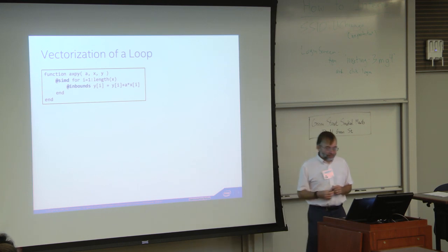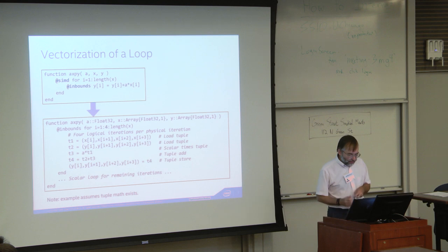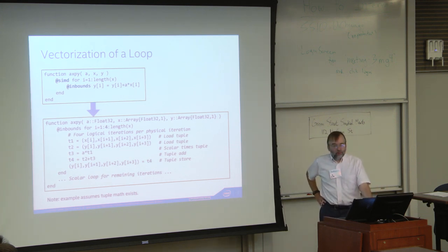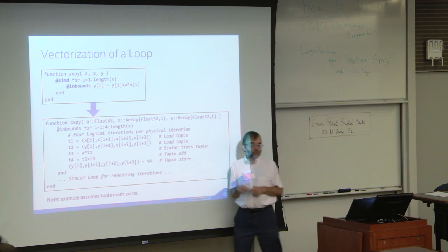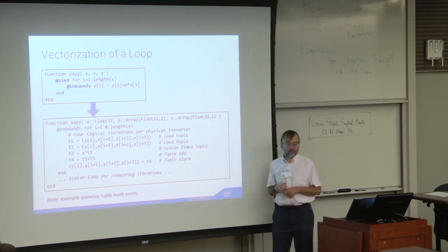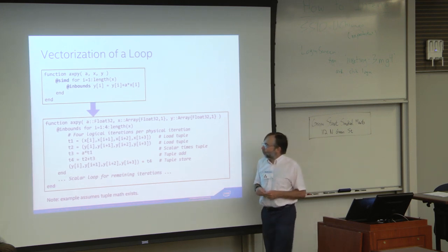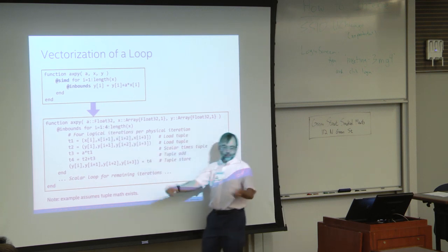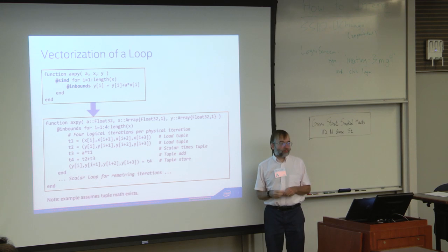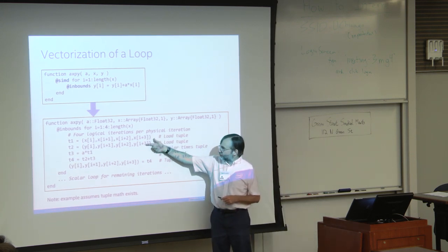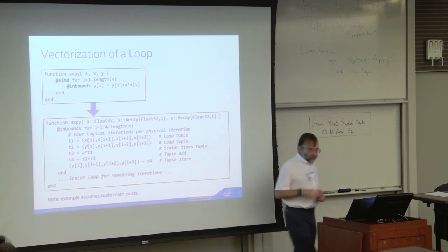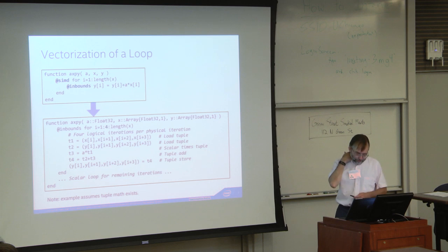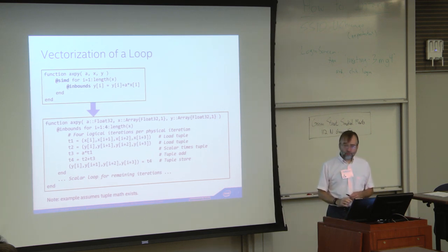The @inbounds annotation is unfortunately necessary right now. The compiler takes that code and turns it into something that's the moral equivalent of the Julia code shown here — the code is for a specific instance with a specific parameter type, here Float32. The loop is now changed to loop that eats four iterations at a time, stepping through four iterations at a time. For each iteration, it picks up four values, picks up four values from the y vector, does element-wise multiplication, addition, and does a store. Each time through, it chomps off four iterations at a time, and can do that just about as fast as it can chomp single iterations.